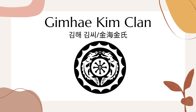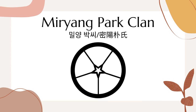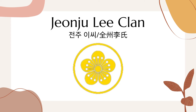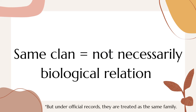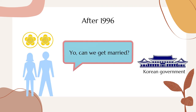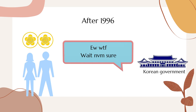Currently, the Gimhae Kim clan sits as the most populous clan in Korea with over 4.5 million members. The Miryang Park clan sits at number 2 with 3.1 million members. The Jeonju Lee clan, the royal family, sits at number 3 with 2.6 million members. So it's very safe to assume that the majority of people in Korea did not actually originate from Yangban clans. This is also partly why the Korean government abolished the law where people could not marry members of their own clans, because it's highly unlikely that two people in the same clan who grew up unaware of each other are actually genetically related.